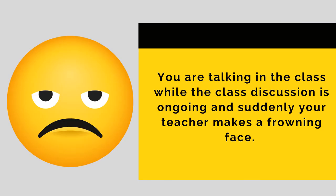For example, you are talking in the class while the class discussion is ongoing and suddenly your teacher makes a frowning face. Based from the text and your prior knowledge, it can be inferred that your teacher is angry with you. This is the general statement. What evidence do we have about this claim? You are talking in the class while the class discussion is ongoing. Your teacher is trying to make a point in her discussion. Suddenly, she makes a frowning face. This is the text evidence through making inference.